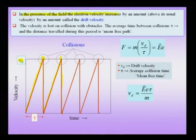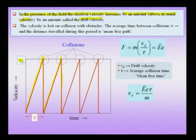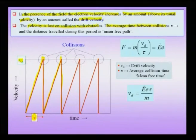In the presence of an electric field, the electron velocity increases by an amount above its usual velocity — the drift velocity. The drift velocity is the velocity acquired in the presence of the electric field, and this velocity is lost on collision with obstacles. The average time between collisions is given by τ, and the distance actually travelled during this period is called the mean free path. The word 'mean' is because each electron follows a different time before it suffers a collision, and what is described is an average quantity statistically over a large number of electrons.